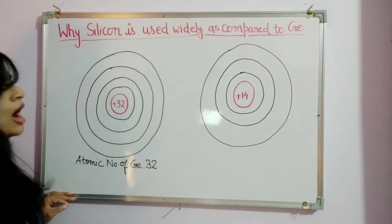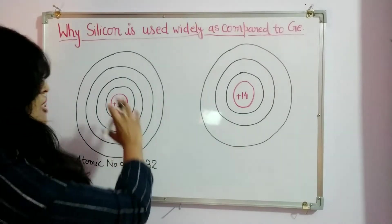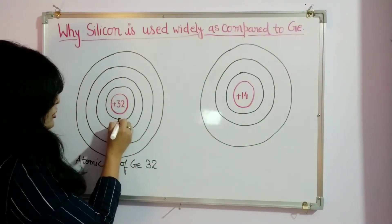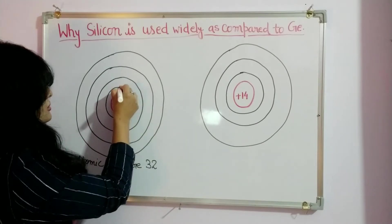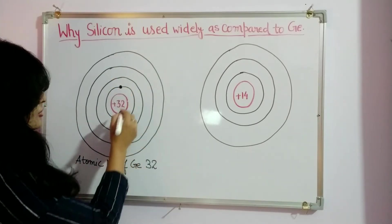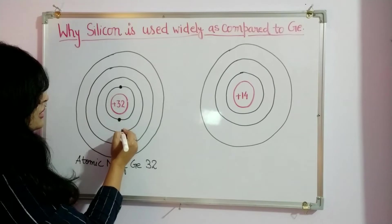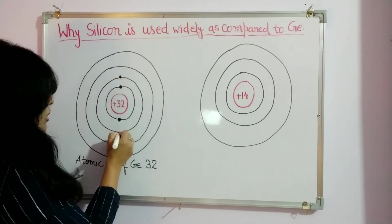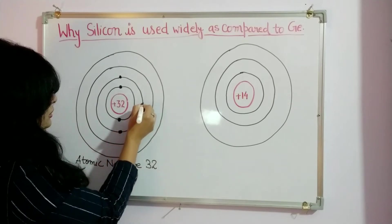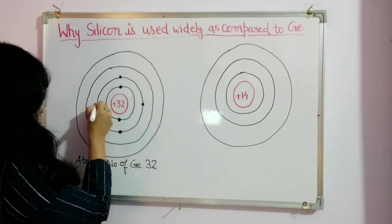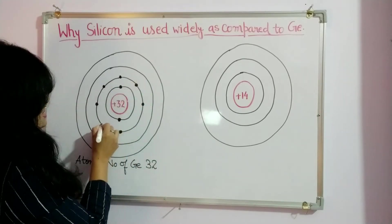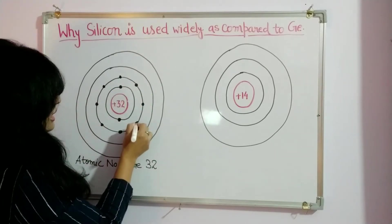So how are 32 electrons arranged in these shells? In the first shell we have two electrons. In the second shell we will have eight electrons: one, two, three, four, five, six, seven, and eight.